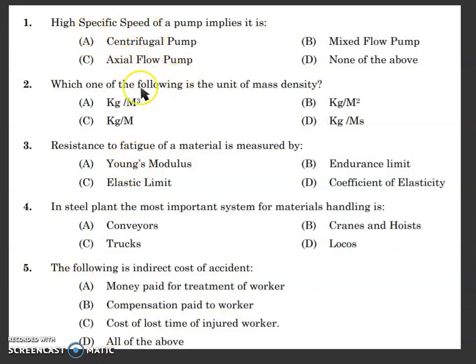The next question is: what is the unit of mass density? Going into fluid mechanics, density equals mass divided by volume. Mass unit is kilogram, volume is cubic meters, so the unit is kilogram per meter cube. Note that mass density is not the same as weight density — weight density is weight by volume, which gives Newton per meter cube.